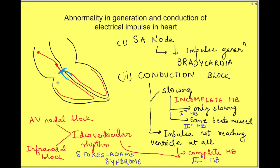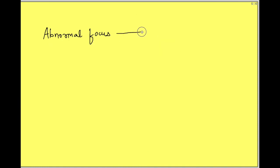Apart from this, abnormalities in generation and conduction of impulses can occur if there is an abnormal focus apart from the SA node which is irritable and generates action potential. Since myocardium is a syncytium, that potential will also spread to the heart causing extra beat.